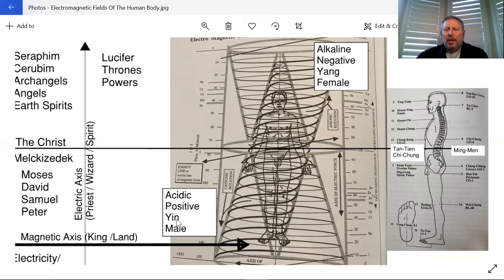As we come down, we approach this acidic or positive energy or yin or male energy. These two vortexes, one coming to the top, the alkalinity, the negative, the female coming up, moving down, the male starting at the ground and moving up to the acidic and positive realm.